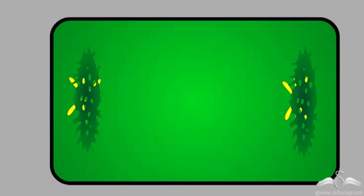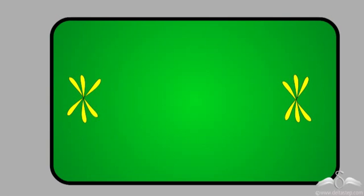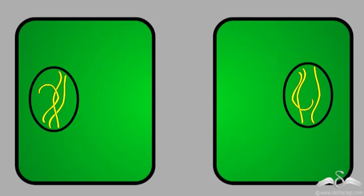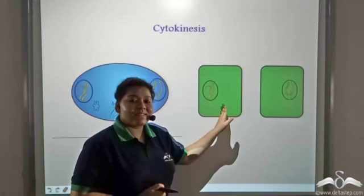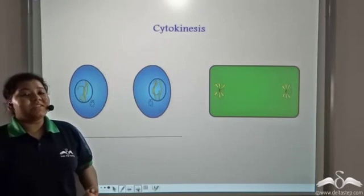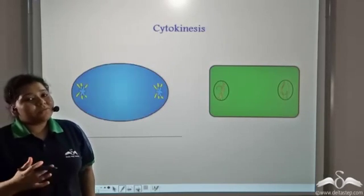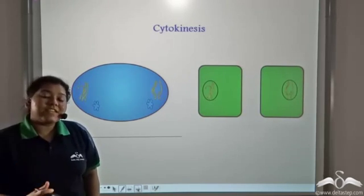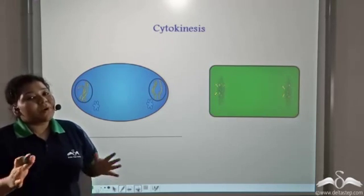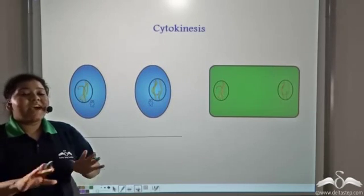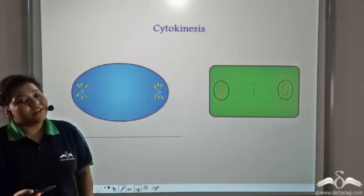But in case of plant cells, furrowing of cytoplasm does not take place, but there is a cell plate formation which causes the formation of two new daughter cells. The daughter cells have an equal distribution of organelles as well. These organelles were formed in the G1 phase, so the organelles had been duplicated, and both the daughter cells have an equal distribution of organelles.